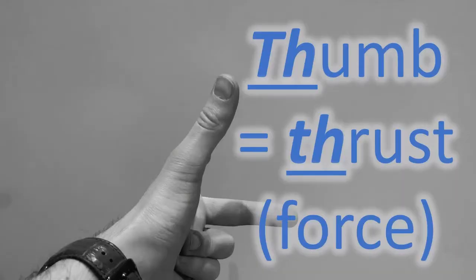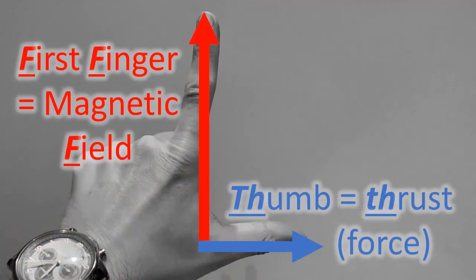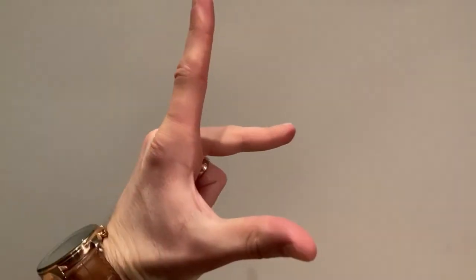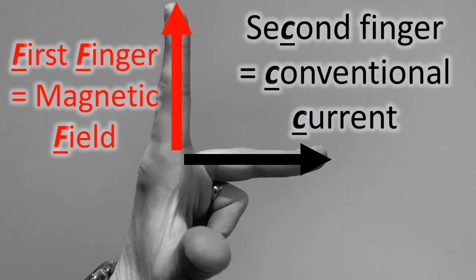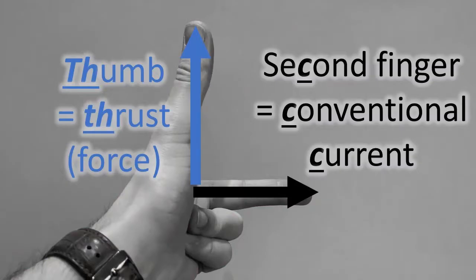Fleming's left-hand rule has your thumb, your first finger and your second finger perpendicular to each other. What that means is your thumb, indicating the direction of thrust or force, is at 90 degrees to your first finger, the magnetic field running north to south. The magnetic field is at 90 degrees to your second finger, the direction of conventional current. The conventional current is 90 degrees to your thumb, the thrust or the force, of course.